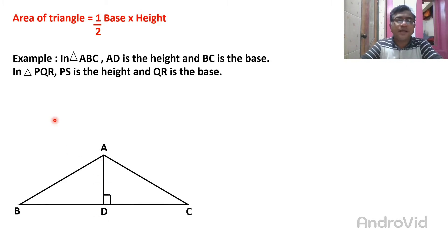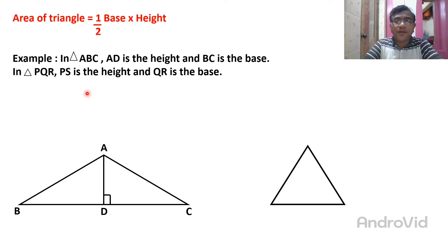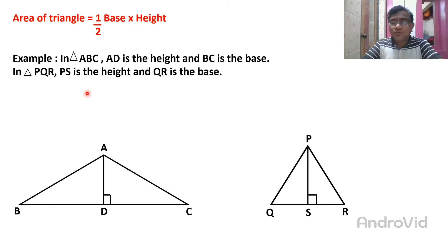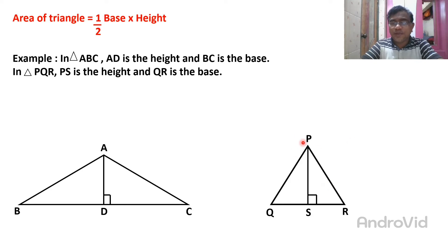There is a second triangle. In triangle PQR, PS is the height. So here we can draw another triangle. This is triangle PQR. In this triangle PQR, PS is the height of the triangle.